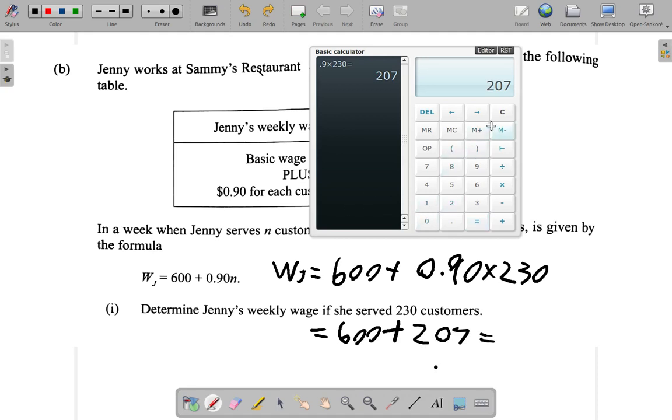The $207 will add to the $600. So $600 plus $207 equals $807.